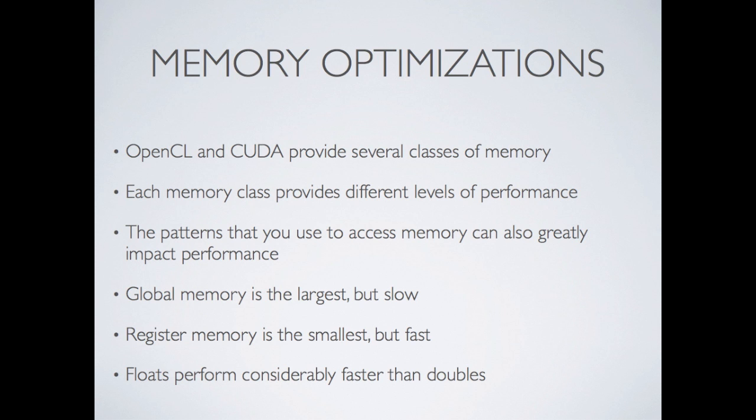For GPU programming, you need to deal with memory optimization. There are several classes of memory available to you with very different performance characteristics. Global memory is the largest but very slow — particularly writing to global is extremely slow. Register memory is the smallest but also the fastest; typically your local variables are your registers. Floats are considerably faster than doubles, which is another thing to consider.